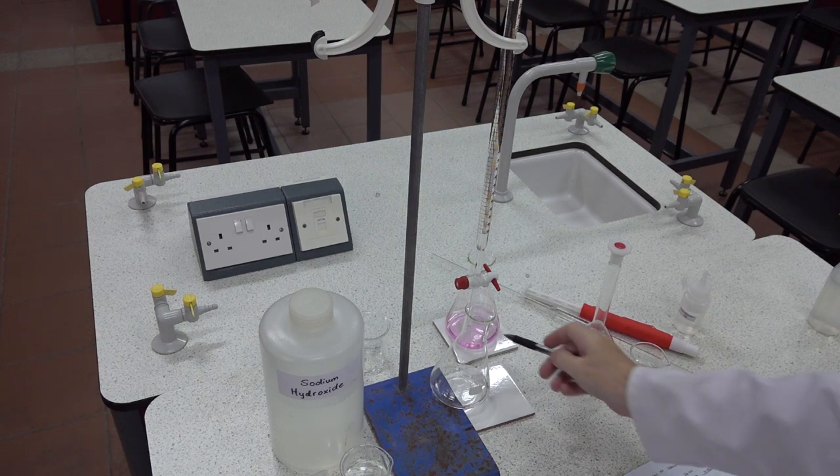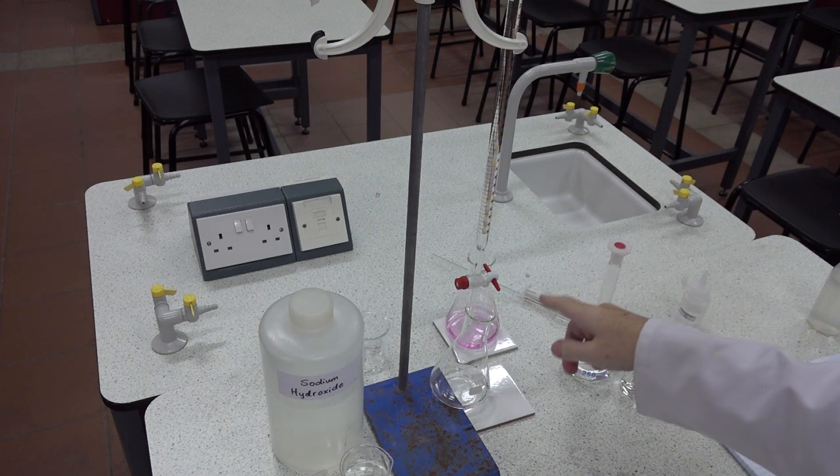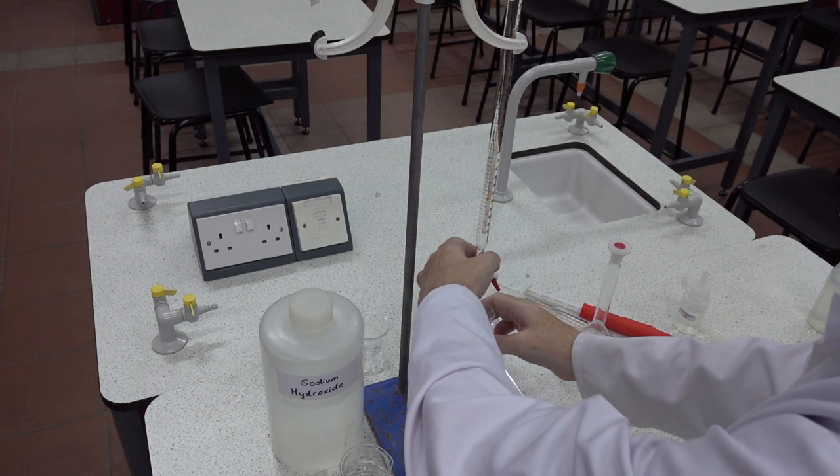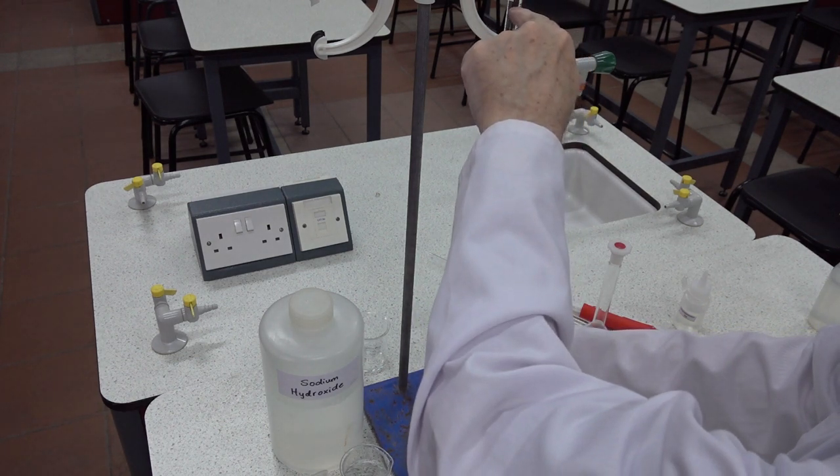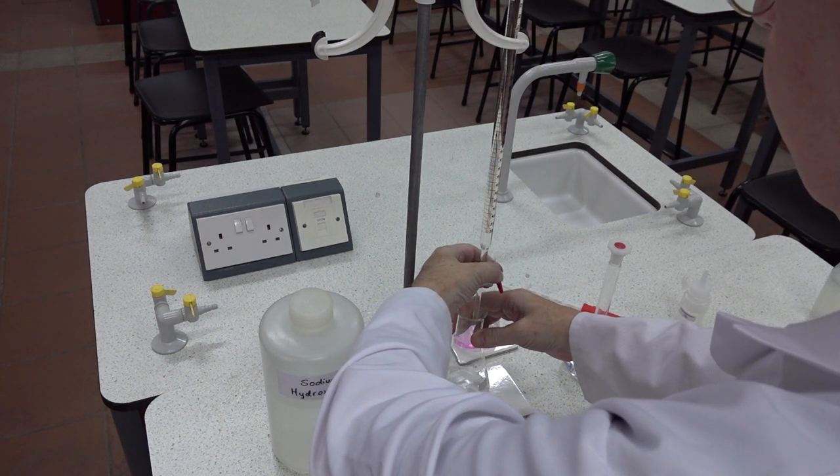We've already done a rangefinder titration and we found out that we required 26.4 centimeters cubed of the sodium hydroxide to change the color of the indicator, so we ought to be able to add 25 centimeters cubed quite comfortably without a persistent color change.